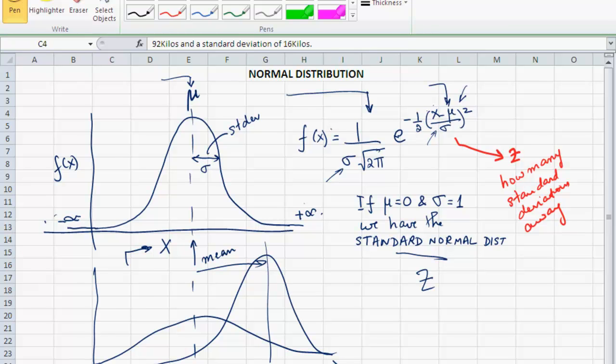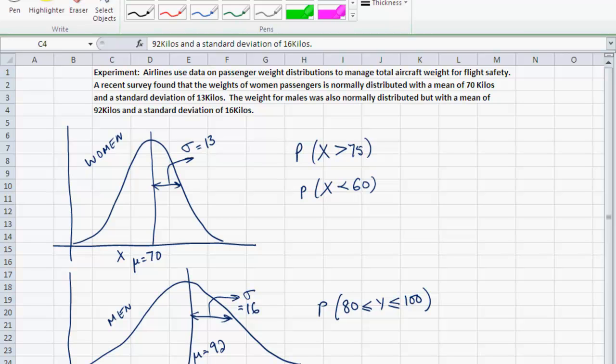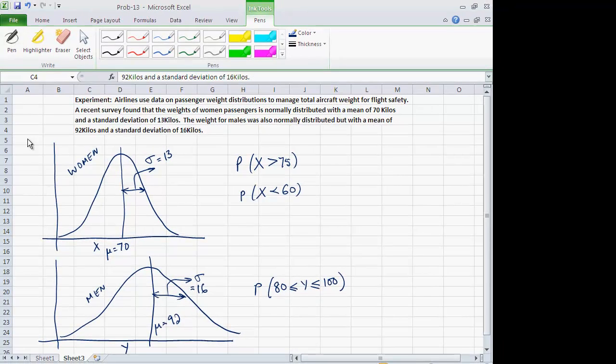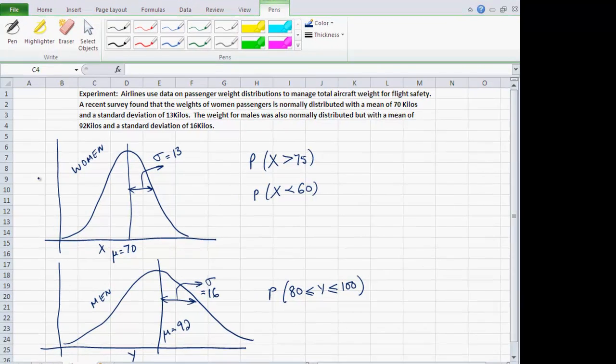When you're computing probabilities with the normal distribution or any continuous distribution, all you should be thinking about is what area under the density function should I be computing. Here I have a small example. Airlines use data on passenger weight distribution to manage total aircraft weight for flight safety. They have to distribute the load evenly across the aircraft from front to back. A recent survey found that the weights of women passengers is normally distributed with a mean of 70 kilos and a standard deviation of 13 kilos.